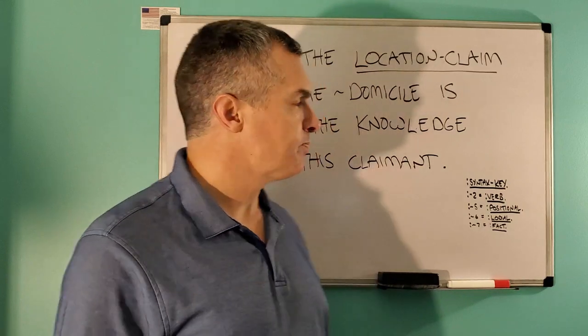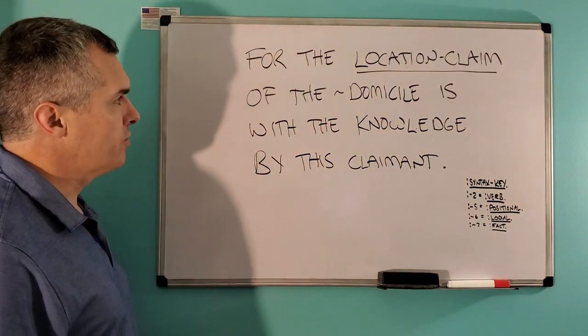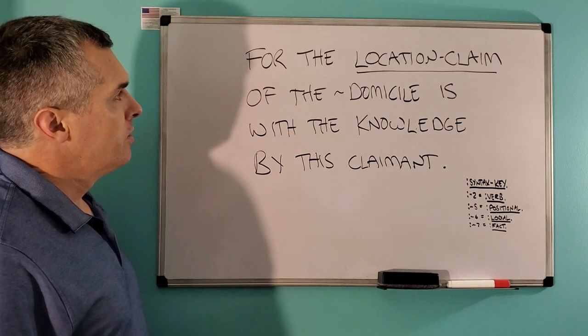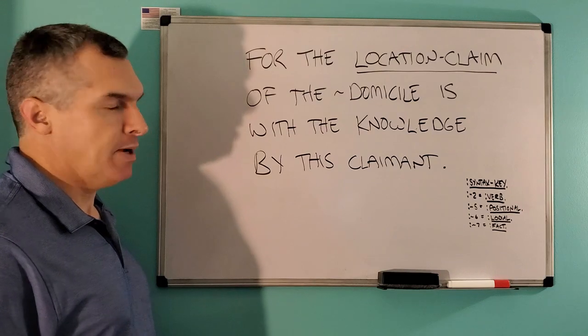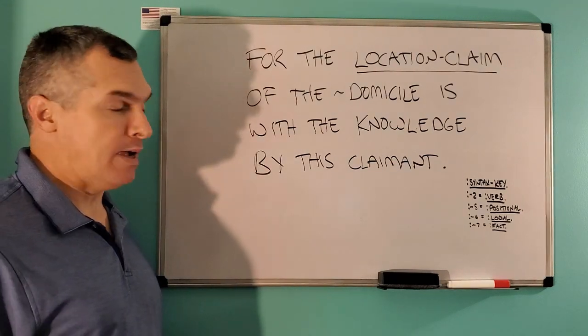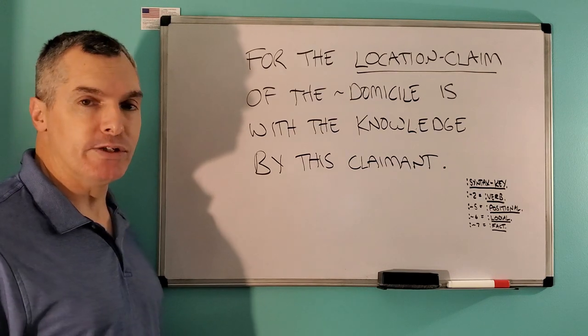To begin with, let's start out with a statement of a claim in Correct Sentence Structure. For the location claim of the domicile is with the knowledge by this claimant. Backwards, for this claimant of the knowledge is with the domicile by the location claim.